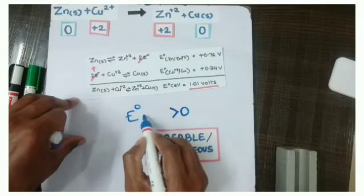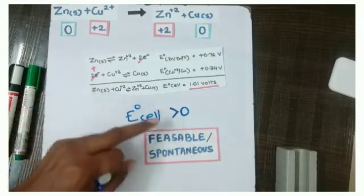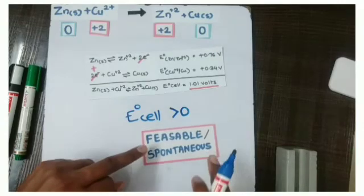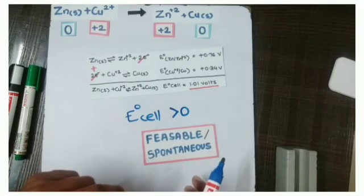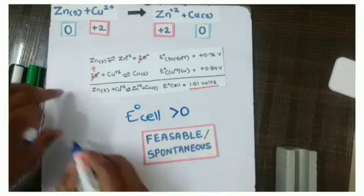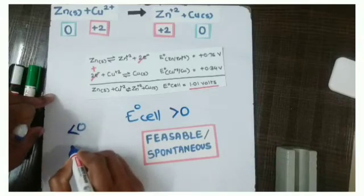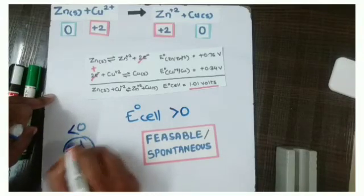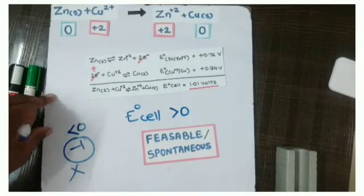If E°cell value is greater than 0, then the reaction is feasible or spontaneous. Okay. If it is less than 0, that means if it is a minus value, then that reaction is not spontaneous.